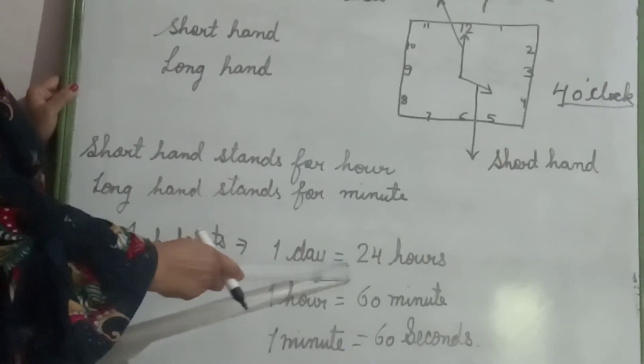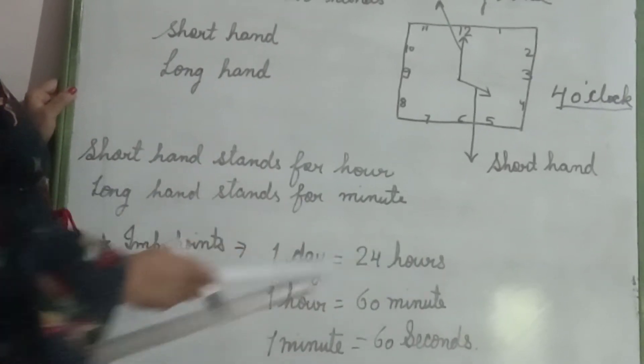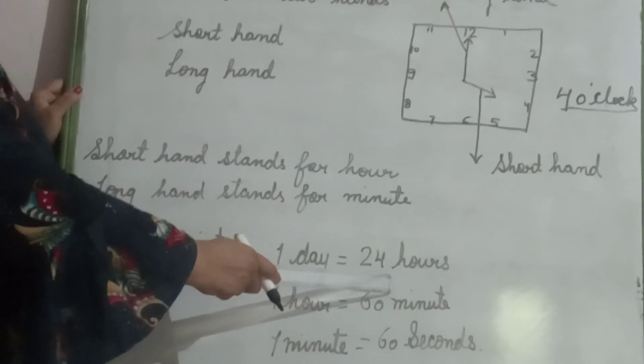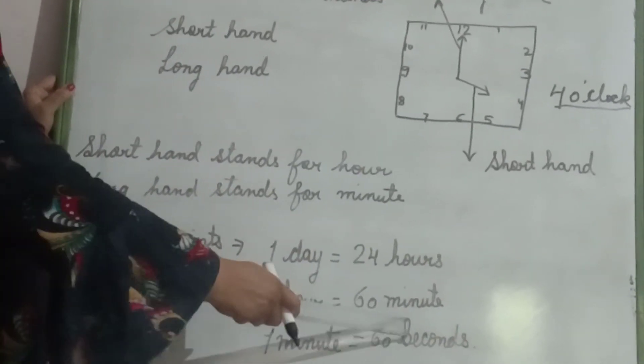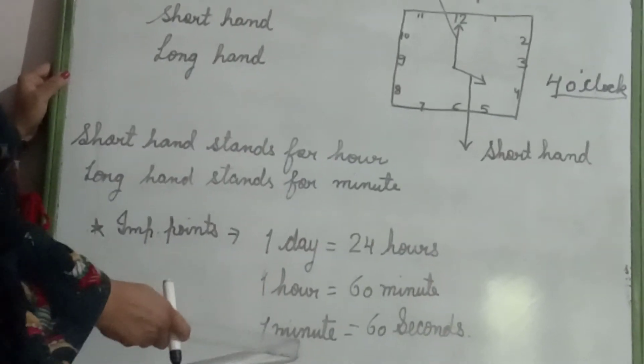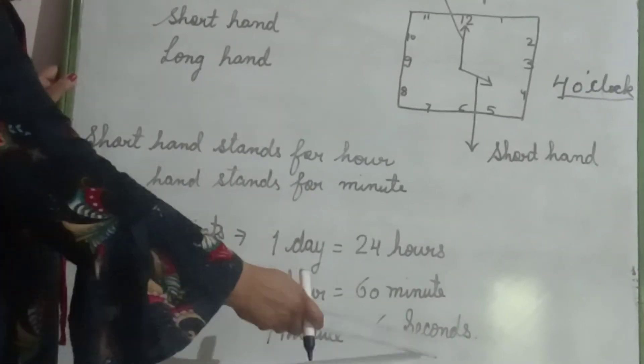One day equals to 24 hours. In one day, how many hours are there, children? 24. In one hour, there are 60 minutes. And in one minute, there are 60 seconds.